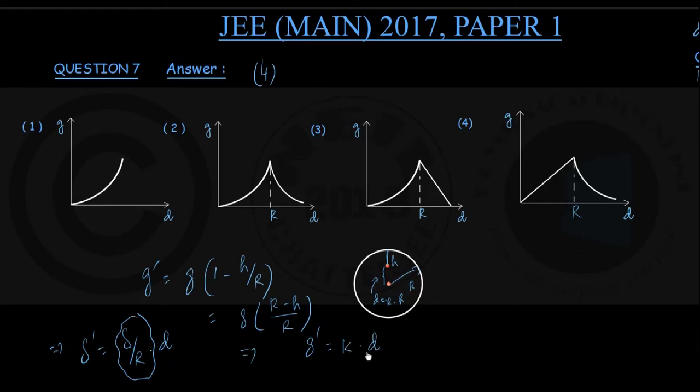Now this equation reminds us of standard equation of a straight line: y is equal to mx, a straight line having slope of m passing through the origin. So if g' is given by simply kd, k being a constant, the graph of g' versus d has to be a straight line from the earth center up to the earth surface, that is where d is equal to r. So between d equals 0 and d equals r, the graph must be a straight line as given by this equation.